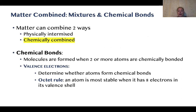Matter can also be chemically combined — this is when molecules are formed, when two or more atoms form new chemical bonds. When forming new chemical bonds, our concern is with the valence electrons, because this is where all the bonding action takes place. We'll have what's called the octet rule. We first fill up the 1s orbital with two electrons; after that, our orbitals take eight electrons. The orbital is stable when it's full, as with the noble gases.